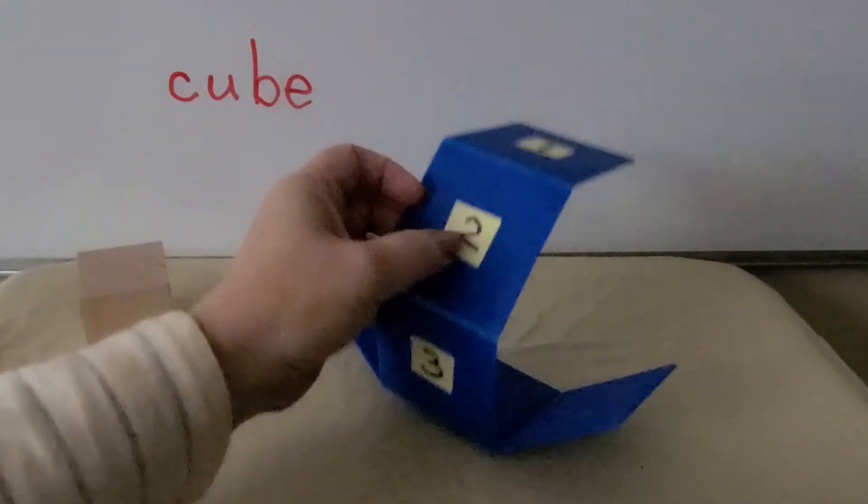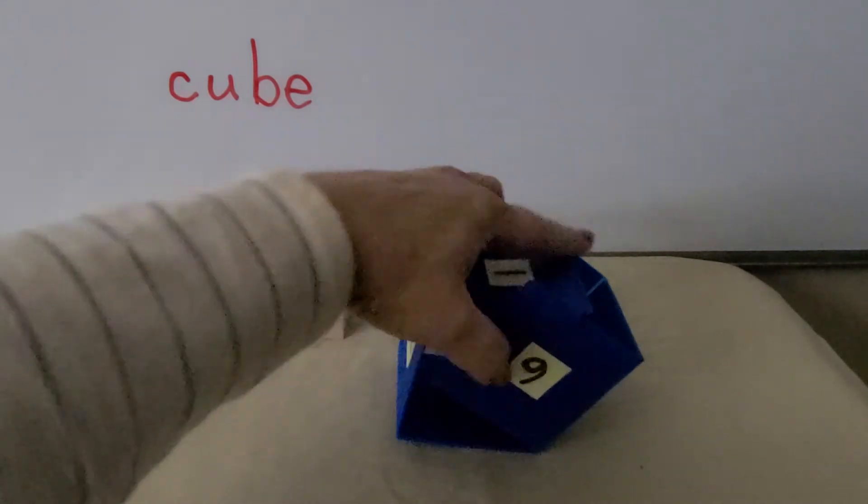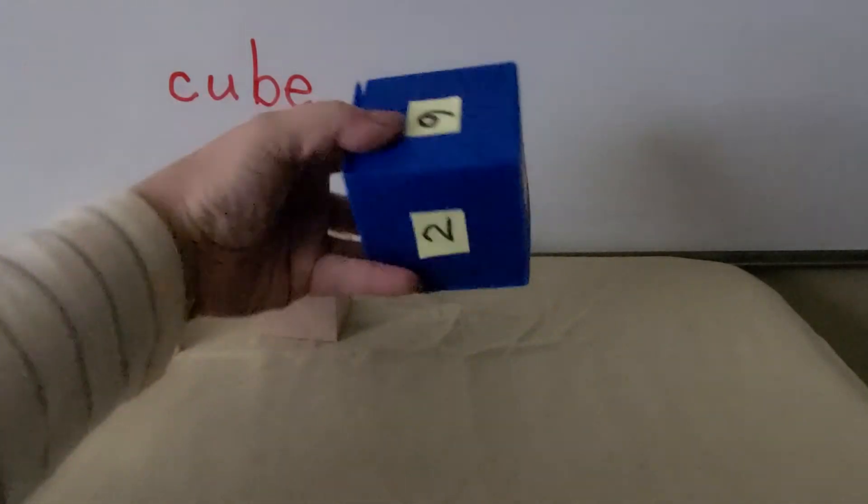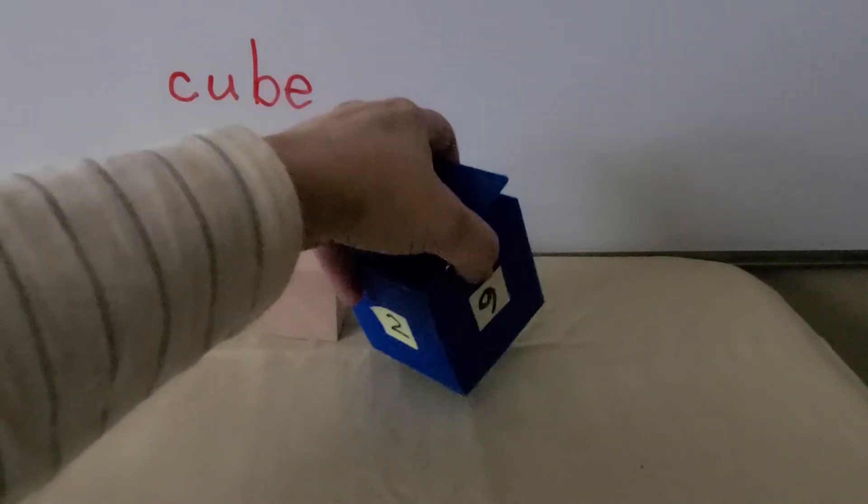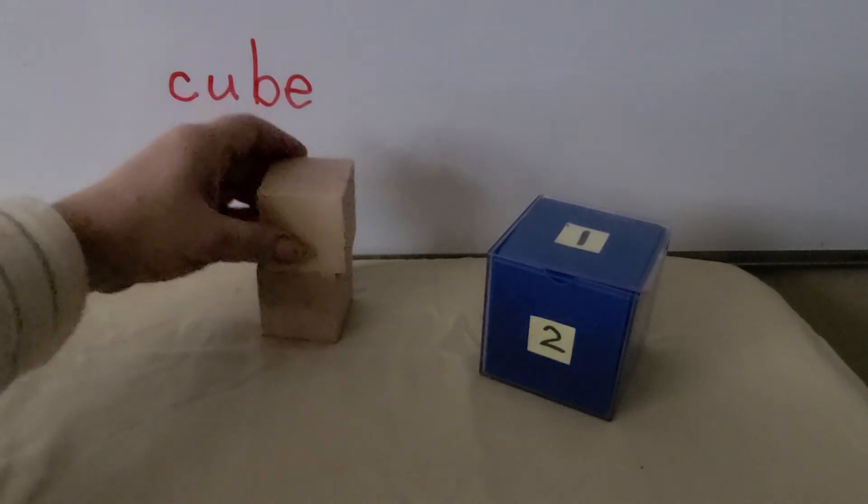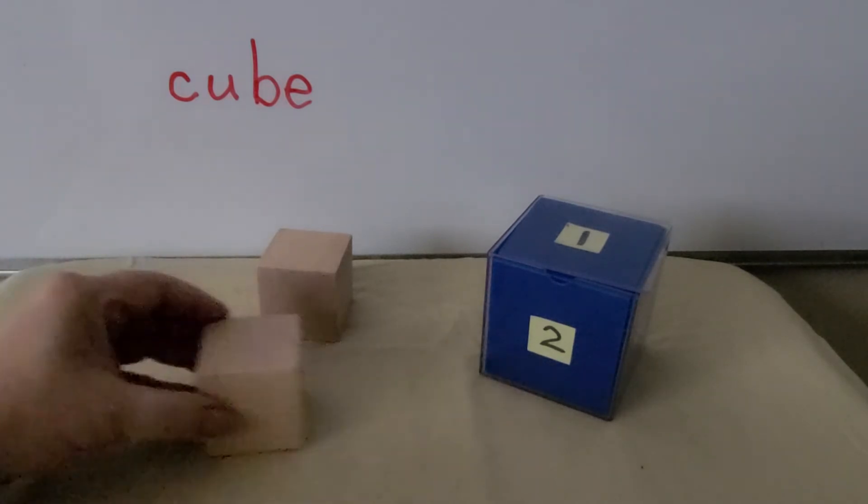We can fold it back up again and turn it back into a cube. See? It's like a box. So a cube has six flat square surfaces that are all the same size, and a cube can stack to make a tower, and it can slide on one of its flat surfaces.